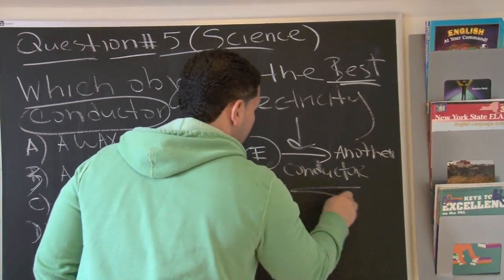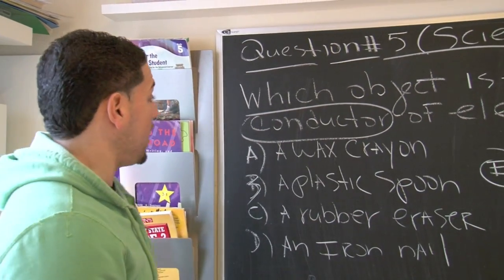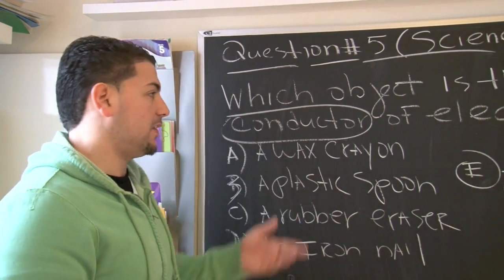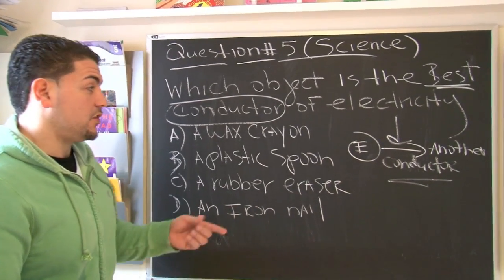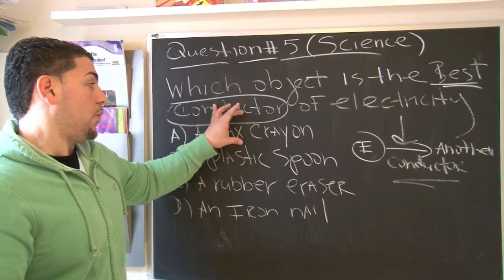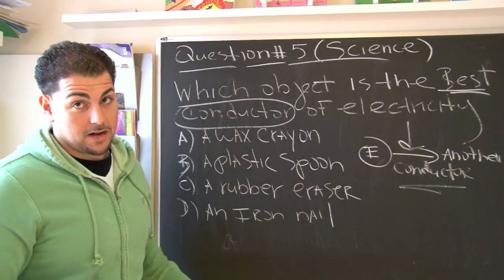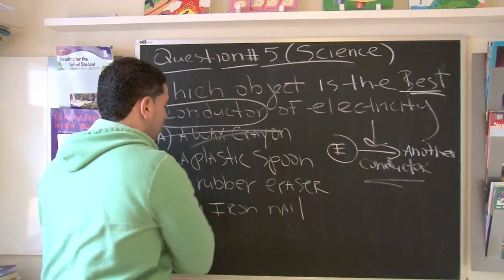Now, we're trying to figure out which is the best conductor of electricity. Well, the first choice they give us is a wax crayon. If you ever used a crayon and you tried to use it to conduct energy, what's going to happen to the crayon? It's going to melt. So this is definitely gone.